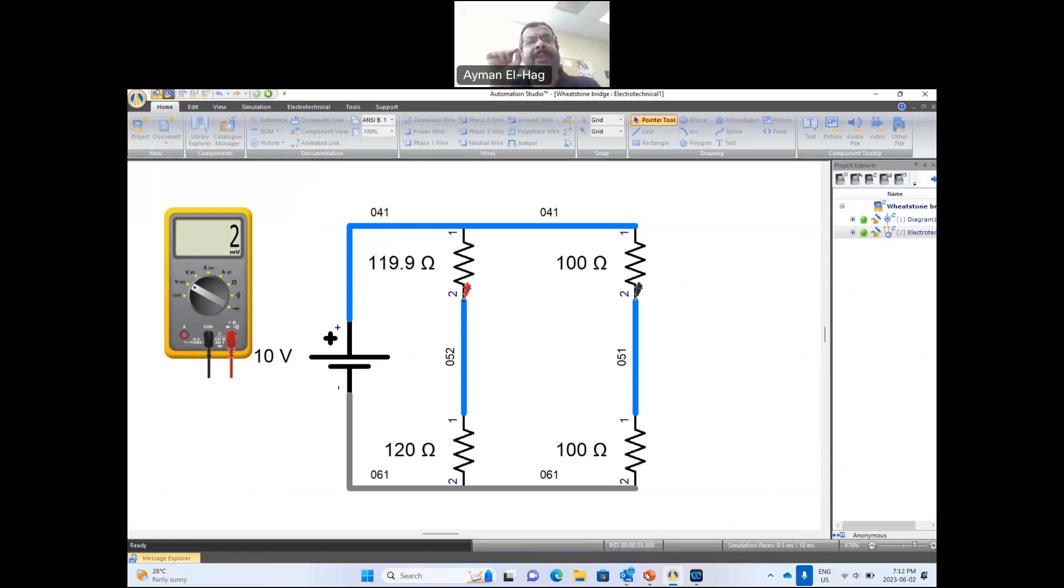So if we have, let's say R1 is the strain gauge, the rest are the same resistors as we have here, and there is no force applied to the strain gauge, then we have a balanced condition, and Vout will be equal to 0.